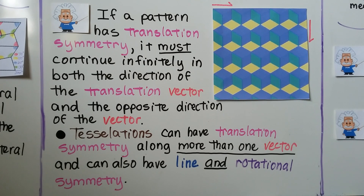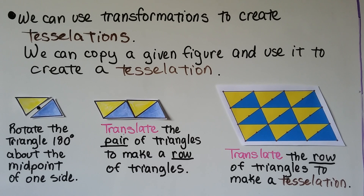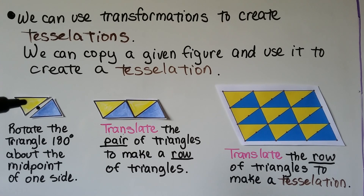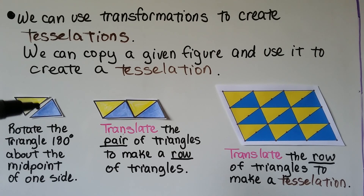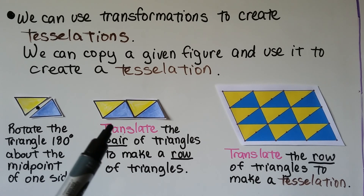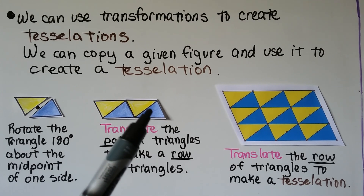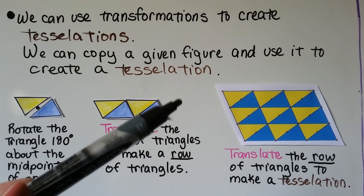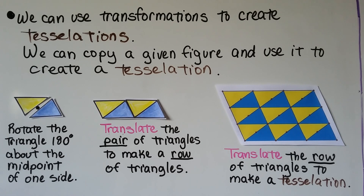Tessellations can also have line and rotational symmetry. We can use transformations to create tessellations by copying a given figure. For example, we rotate a triangle 180 degrees about the midpoint of one side to make a parallelogram. We then translate the pair of triangles to make a row, repeating again and again, then translate the row to make a full tessellation.